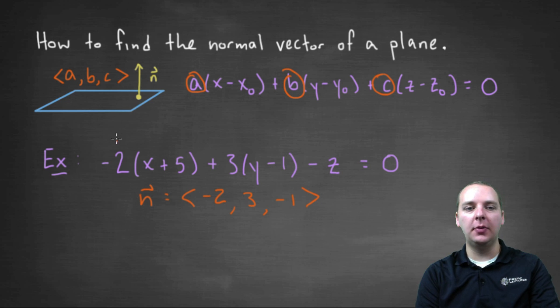Now where did I get those numbers from? From right here, here, and the coefficient of z, because it's minus z, we'll take that to be negative one times z. So this would be our vector that's orthogonal to our plane.